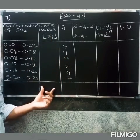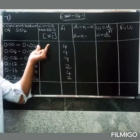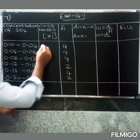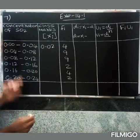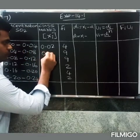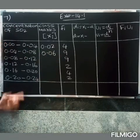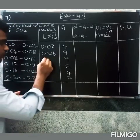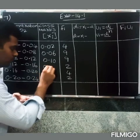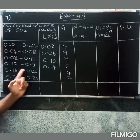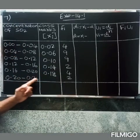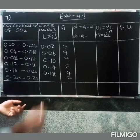First, we have to get class marks. We have decimals. For 0 to 0.04, the middle (class mark) value is 0.02. Next class mark is 0.06, then 0.10, then 0.14. For 0.20 to 0.24, the middle class mark is 0.22.